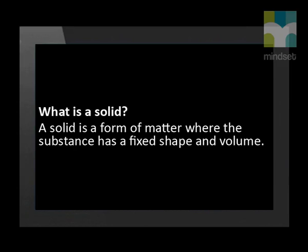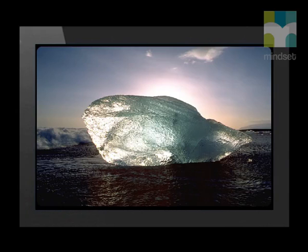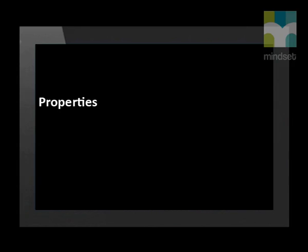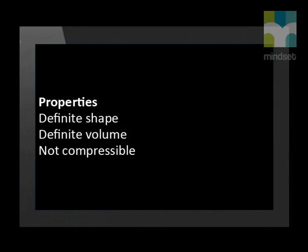What is a solid? A solid is a form of matter where the substance has a fixed shape and volume. Let's take a closer look at a block of ice. It has a definite shape, definite volume, and is not compressible. Its properties consist of a definite shape, definite volume, and is not compressible.